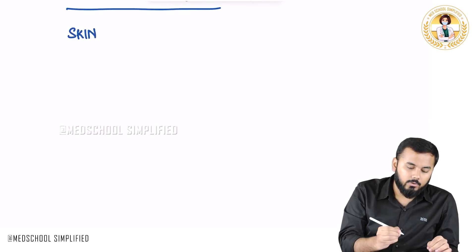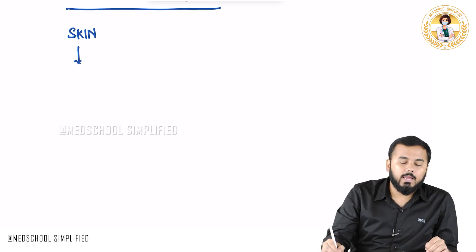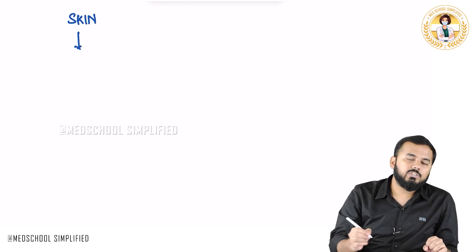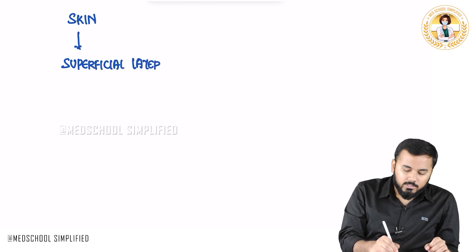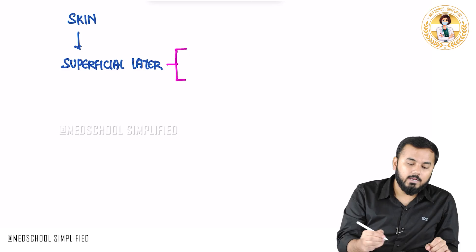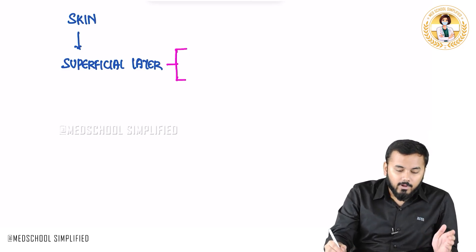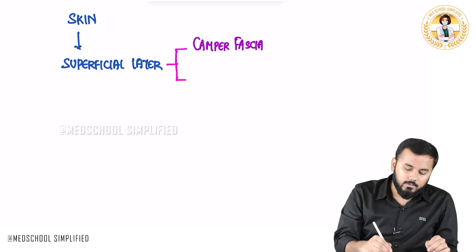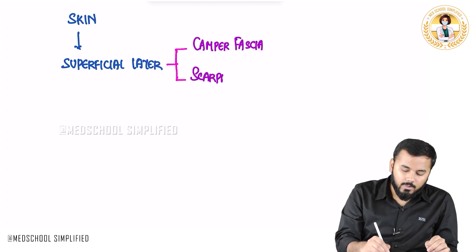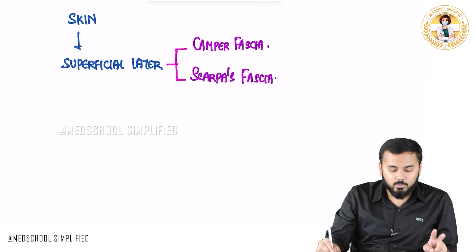So first we have got our skin. Just beneath the skin, the next layer is called the superficial fascia. This superficial layer is comprising of two parts — two fascias. One is called Camper's fascia and the other one is called Scarpa's fascia.